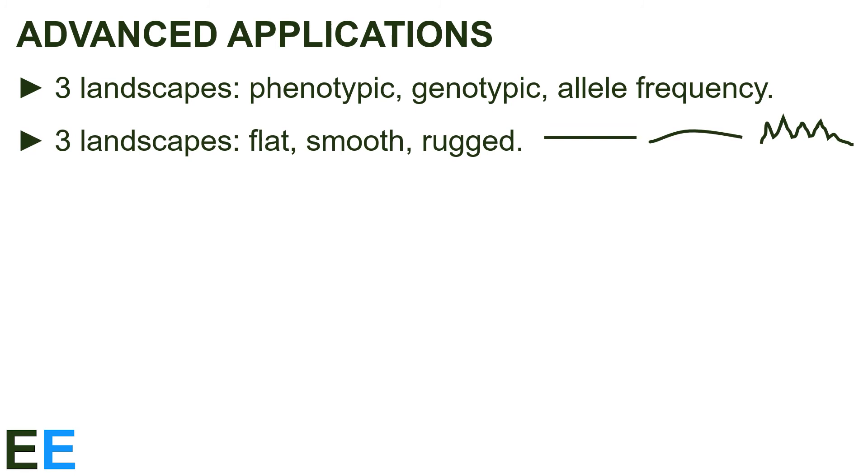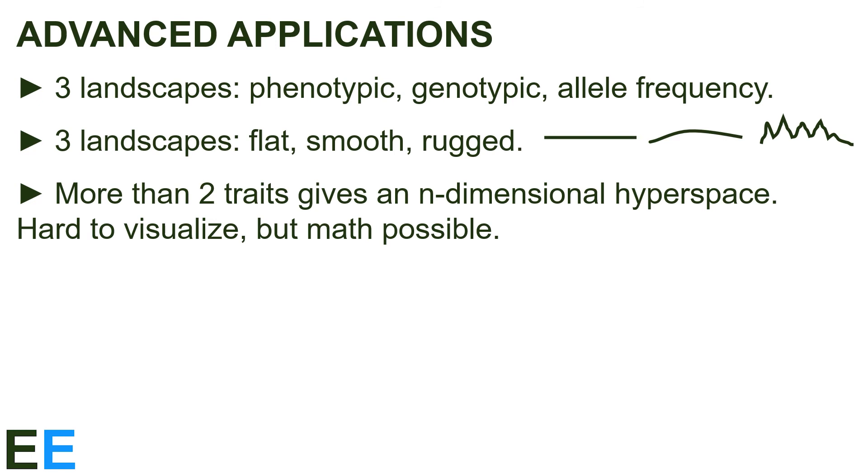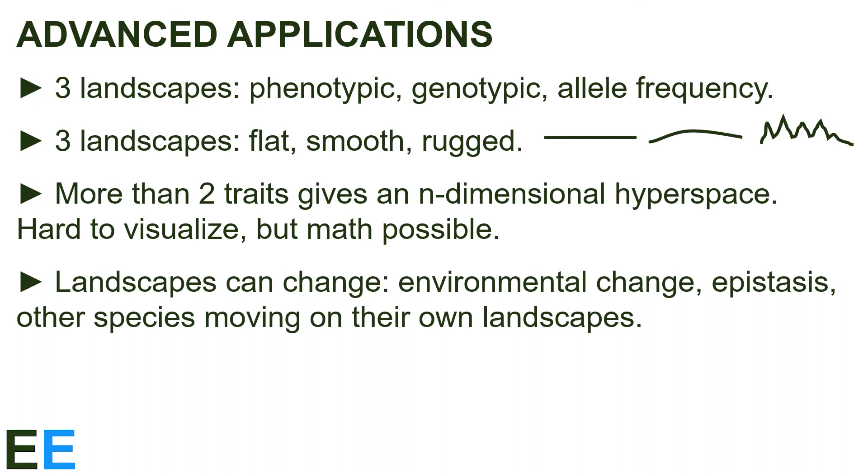Examining mathematical models which compare evolutionary behavior on smooth and rugged landscapes is an active area of research. Landscapes can also be created for more than two traits, and these give you something called an n-dimensional hyperspace with hypersurfaces. This is hard or impossible to visualize, but the math is possible, and insights can be obtained using math instead of diagrams.